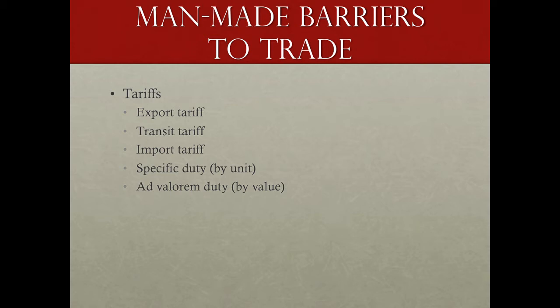If you recall our mercantilist discussion, there continues to exist a bias in almost all country governments in favor of exports and against imports. Any government that wants to increase exports is not going to put a tariff on products being exported, so export tariffs are very rarely used. They are most commonly used in the agricultural field, particularly a product such as rice. A few years ago there was a global shortage of rice — a poor crop and some natural disasters contributed to problems in a number of rice-producing nations.